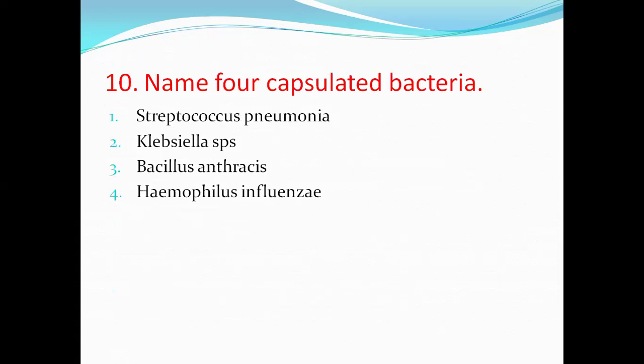Next question: name for capsulated bacteria. Capsule is the outer gelatinous layer secreted around the cell wall, either polysaccharide or polypeptide in nature. Bacillus anthracis capsule is polypeptide in nature, while other bacterial capsules are polysaccharide. Capsule generally inhibits phagocytosis. Examples of capsulated bacteria: Streptococcus pneumoniae, Klebsiella species, Bacillus anthracis, and Haemophilus influenzae.